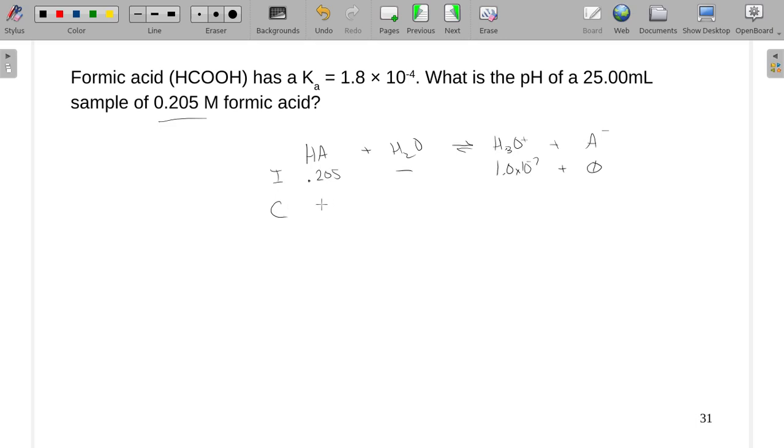My change is always the same. Reactants go down and products go up so I can counterbalance that zero of the A minus. So this is 0.205 and this is 1.0 times 10 to the negative seventh plus X and this is X.